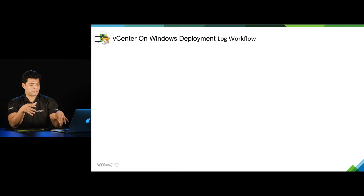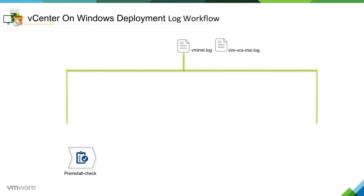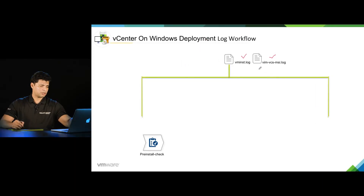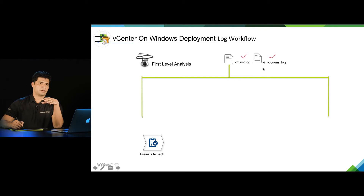To understand where to start, we also need to understand the logs which are generated at different stages. The installer starts with the pre-install phase. At this stage, two logs are created: one is vm_install.log, and another is vim_vcsmsi.log. vim_vcsmsi.log is created by the Windows installer, and vm_install.log is created by the vCenter installer. We can call these first-level analysis logs. This log starts from the pre-install check and continues till the install end stage.